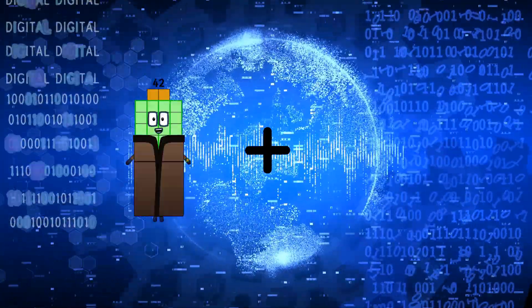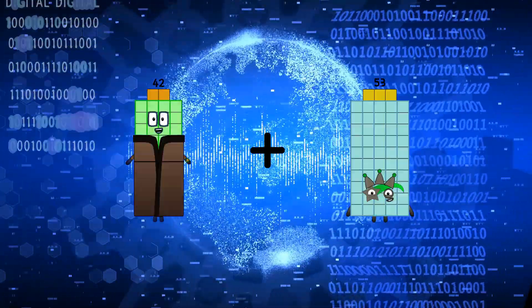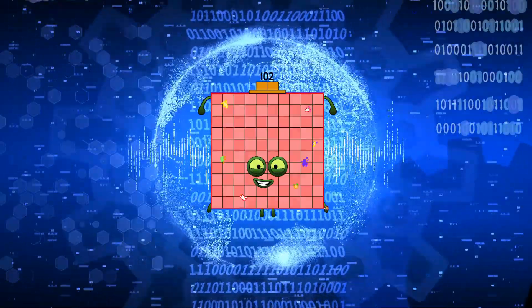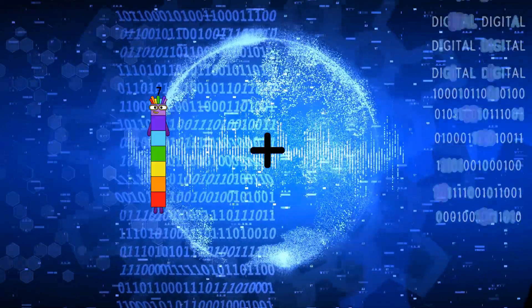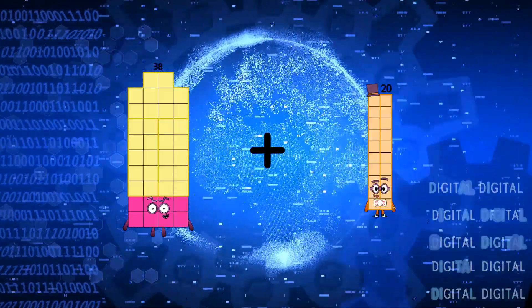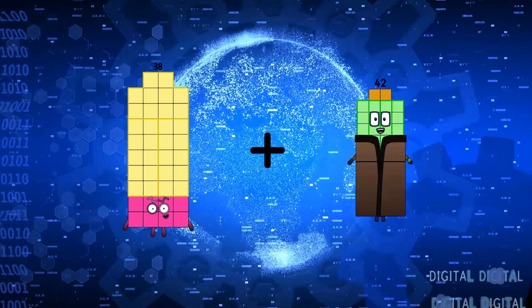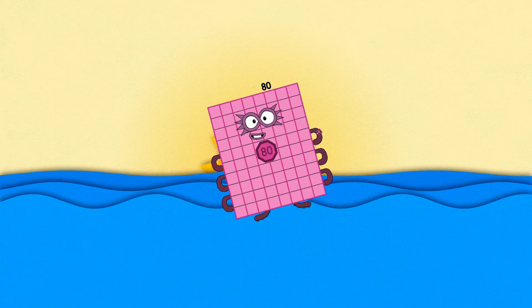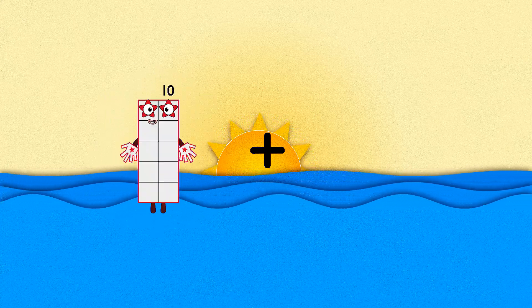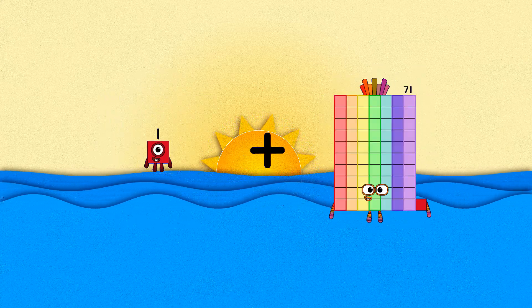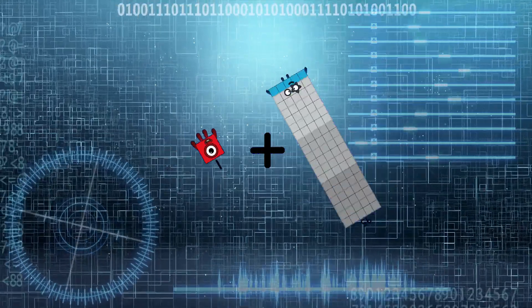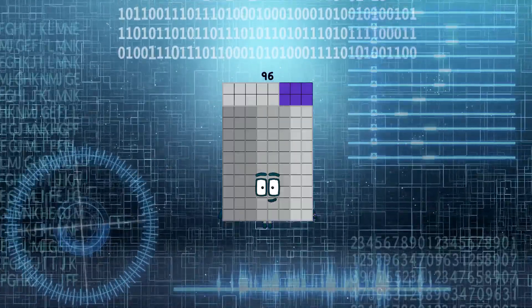42 plus 60 equals 102. 38 plus 42 equals 80. 1 plus 95 equals 96.